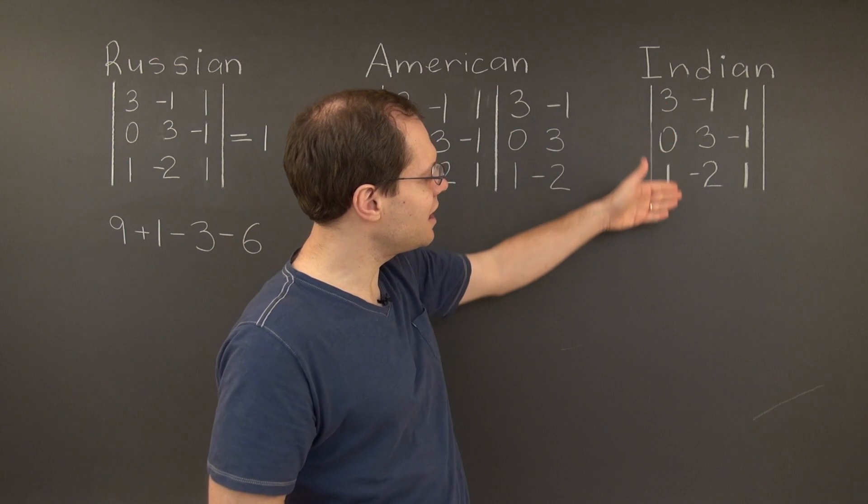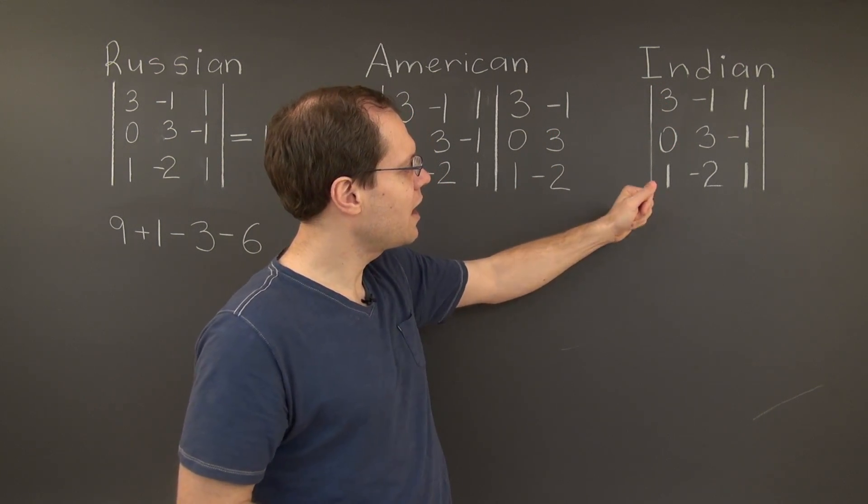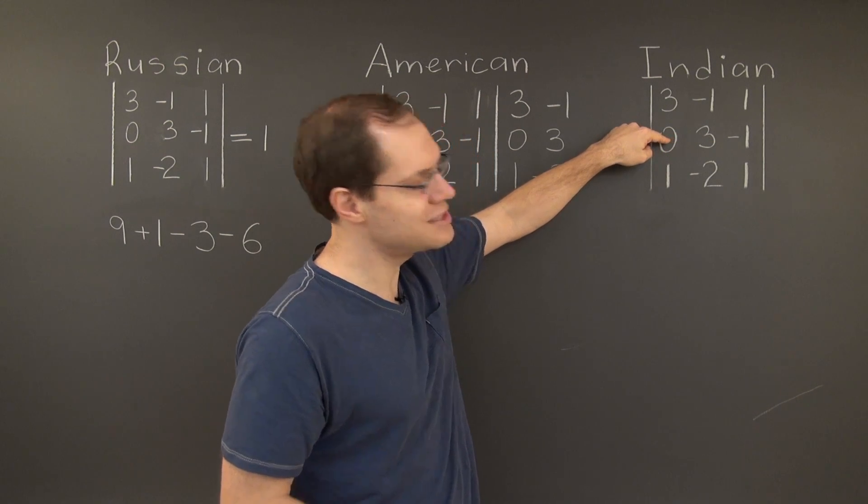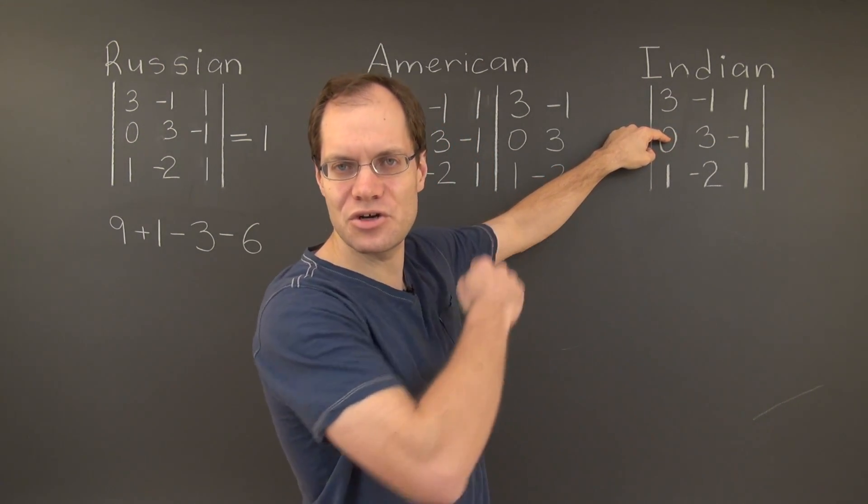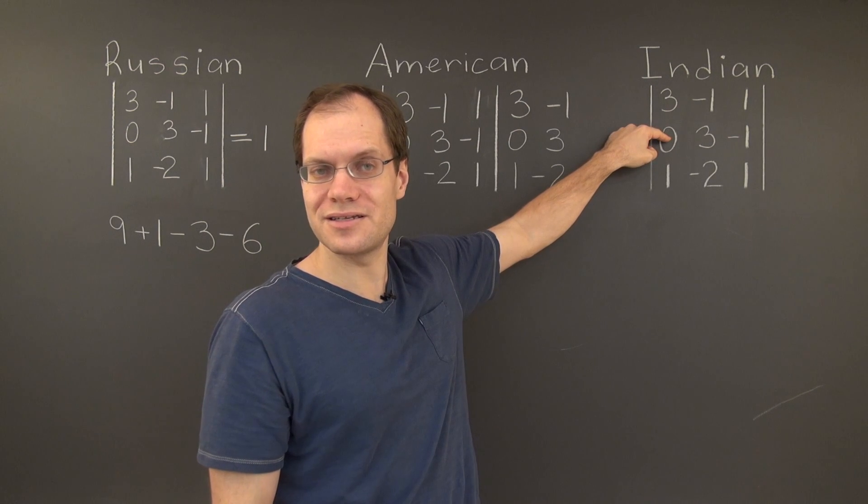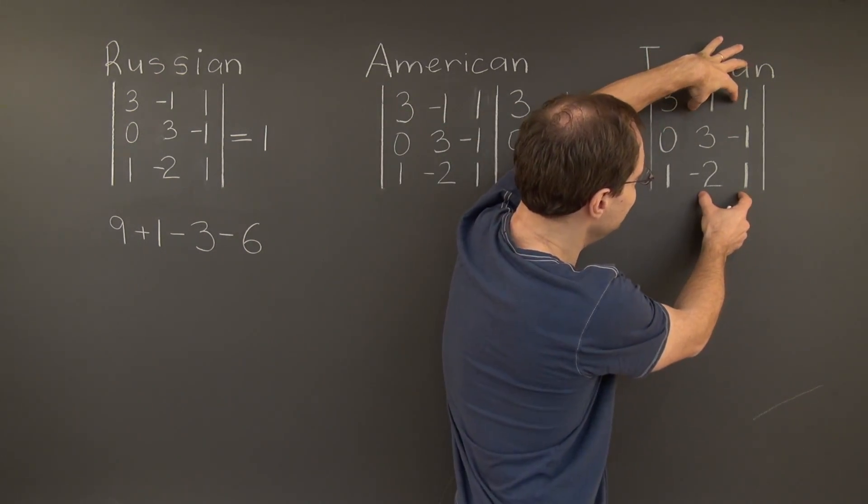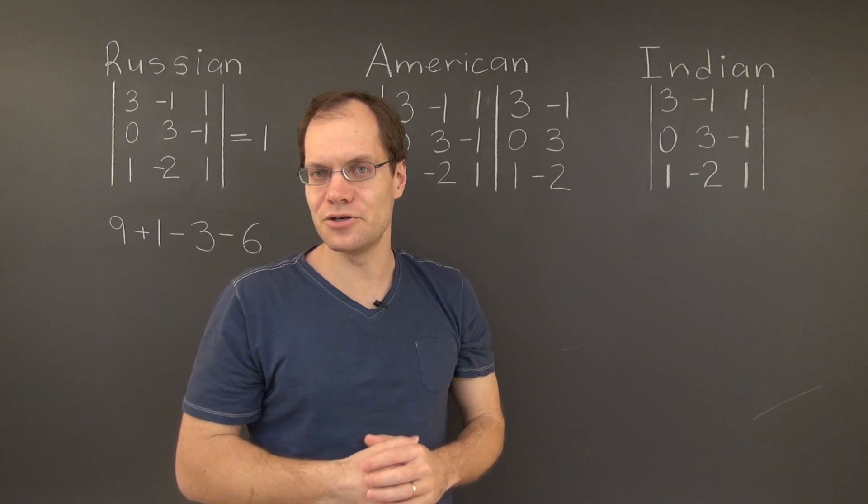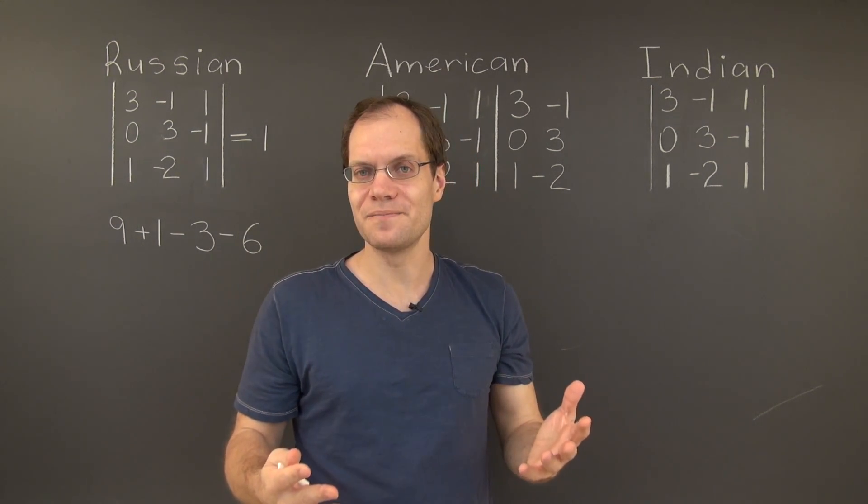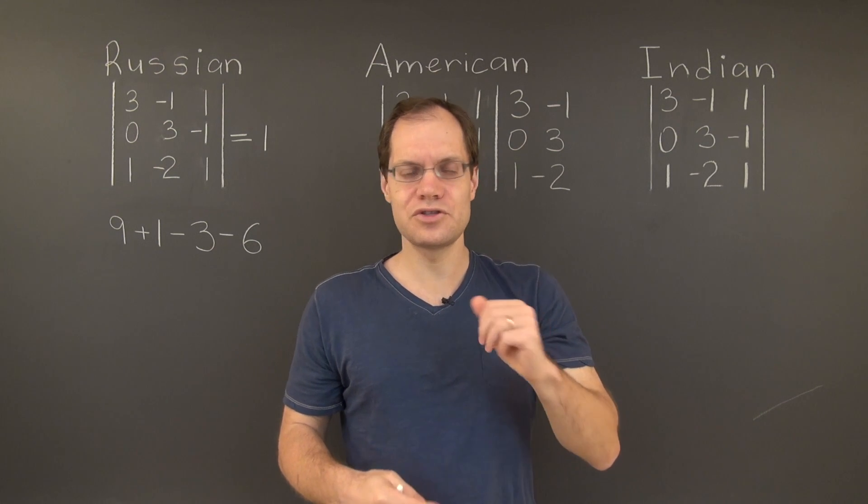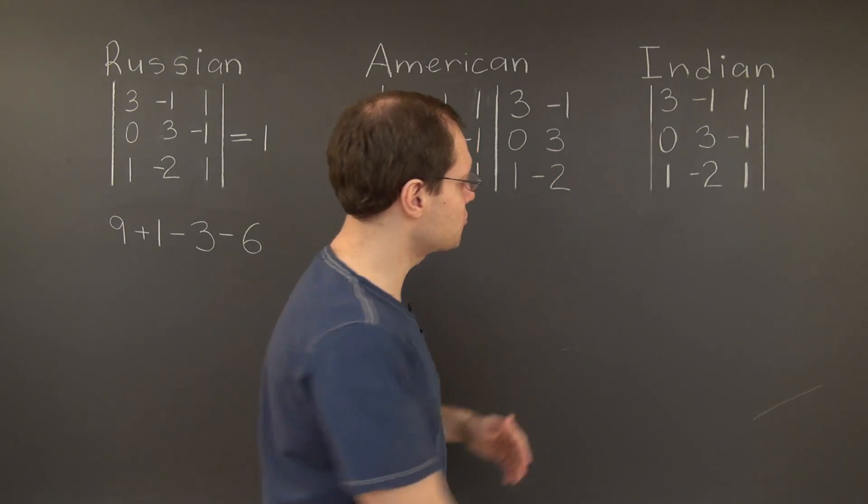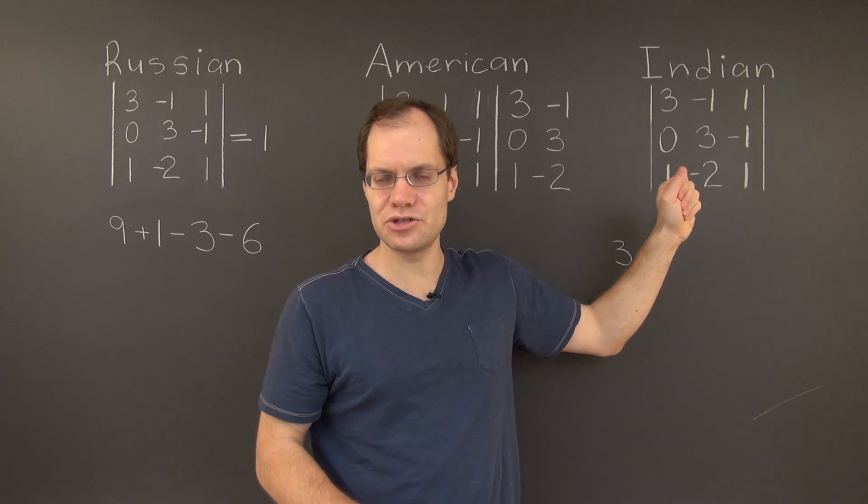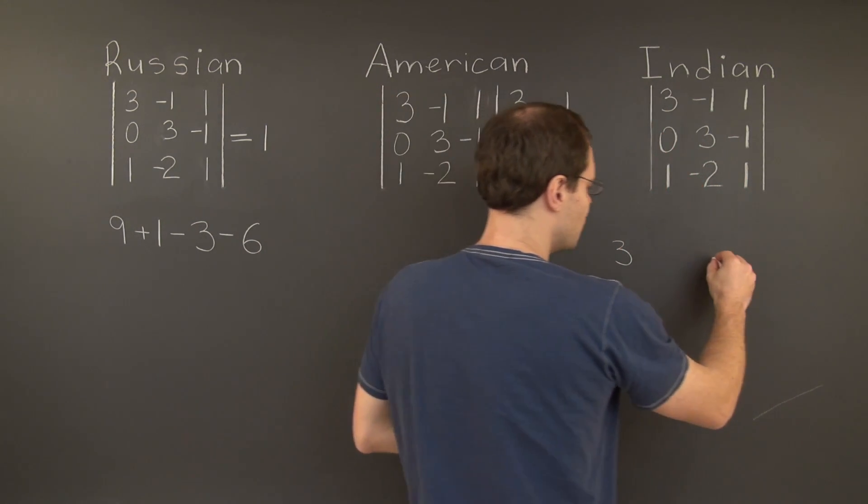So we're going to go with a column expansion. And we're only going to have two terms. Because the term corresponding to this entry is simply not there. It doesn't matter what the corresponding 2x2 determinant is. That would have come from these four entries. Because in the end it will multiply 0. So we'll skip that calculation altogether. And we're left with two terms. It will be 3 times a corresponding 2x2 determinant to be filled in in a moment. And 1.